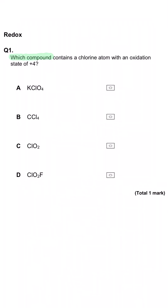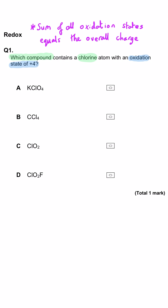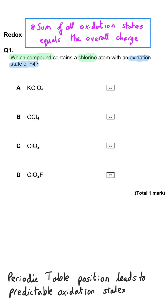Which compound contains a chlorine atom with an oxidation state of plus 4? There are two things we have to remember to work out the oxidation state: the sum of the oxidation states of all atoms is equal to the total charge, and most atoms will have a predictable oxidation state based on their position in the periodic table.